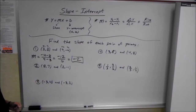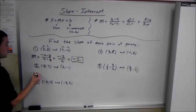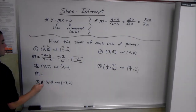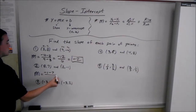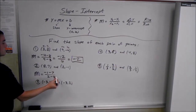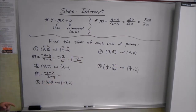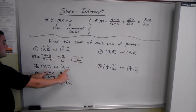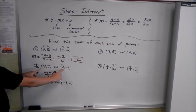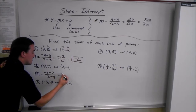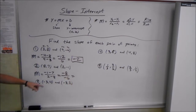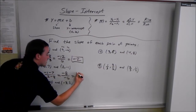Here we have 8 comma 7 and 2 comma negative 1. Same thing — just plug it into the slope equation. m equals negative 1 minus 7 over 2 minus 8, which gives us negative 8 over negative 6. Two negatives make a positive, and we can reduce 8 over 6 — divide top and bottom by 2 — to get 4 over 3.